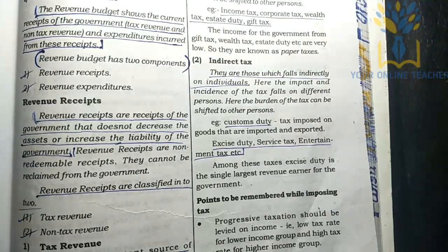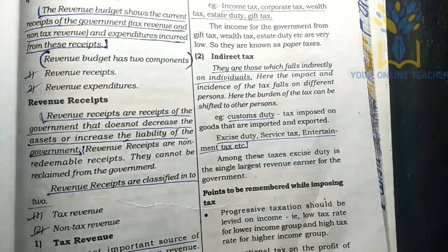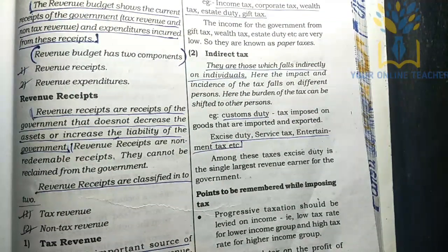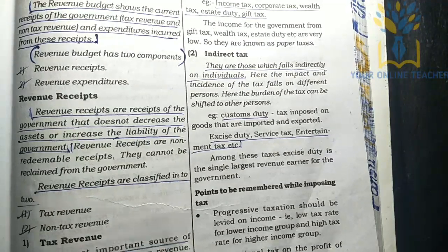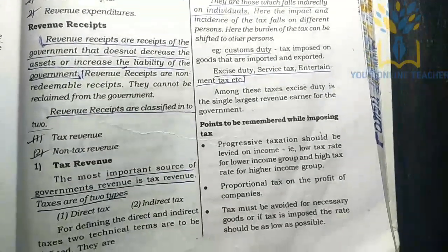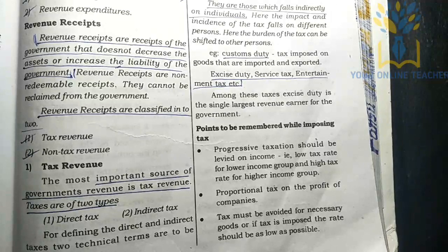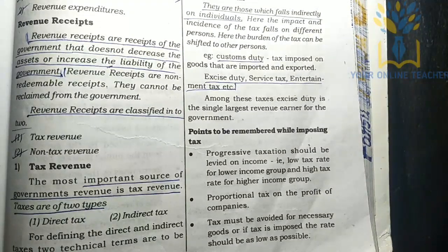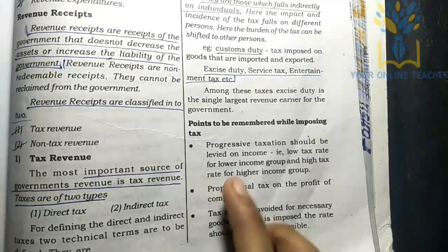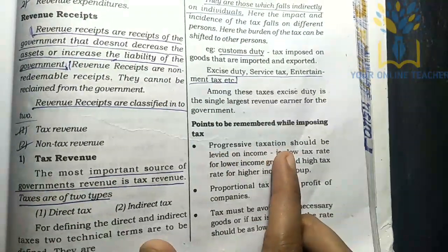Examples of indirect taxes include service tax, entertainment tax, and customs duties. These fall under indirect tax, while income tax falls under direct tax.